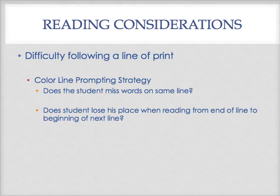If a student has trouble moving from the end of one line to the beginning of the next, you can use an alternating color strategy: they follow a blue line, then switch to orange, then the next line is blue again, then orange — helping them move from the end of one line to the beginning of the next without losing their spot.